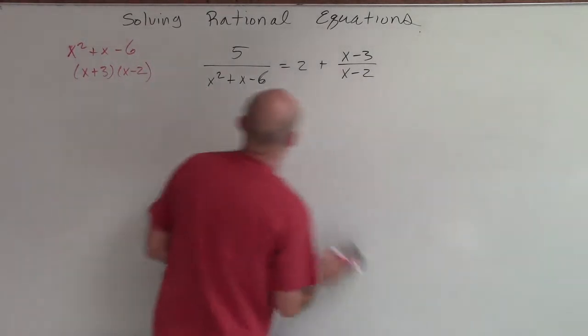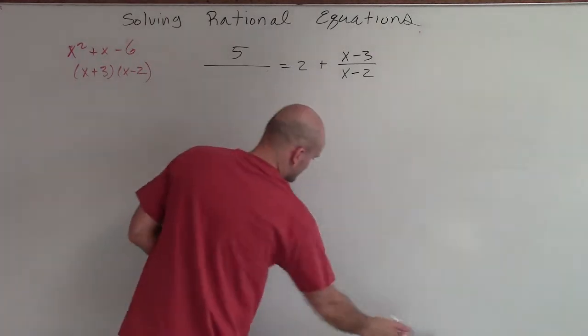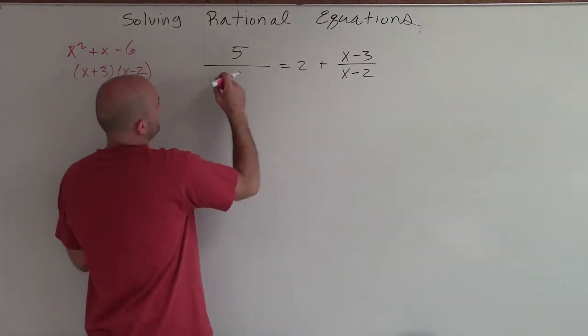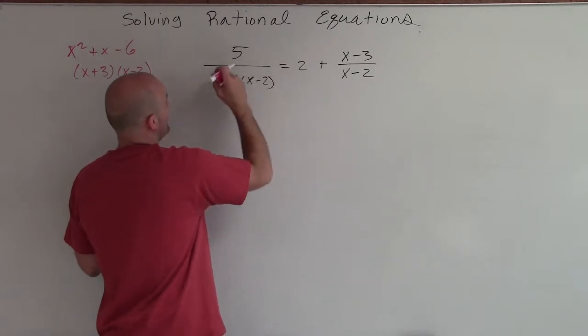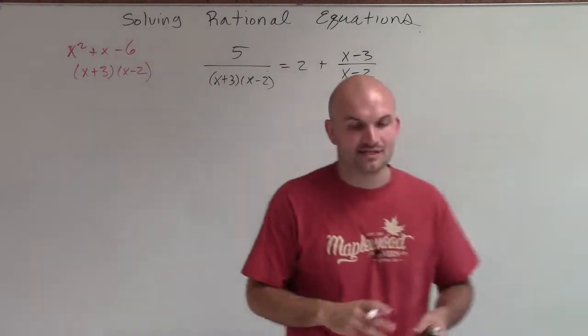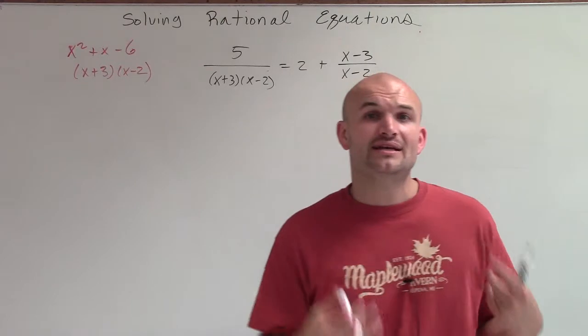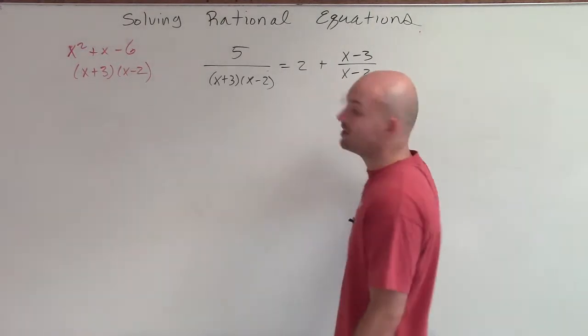So what I'm going to do then is I'm going to rewrite my denominator as x plus 3 times x minus 2. Now, the reason why I did that and why that's so important is because now in the factored form, we can more easily determine what our LCD is.